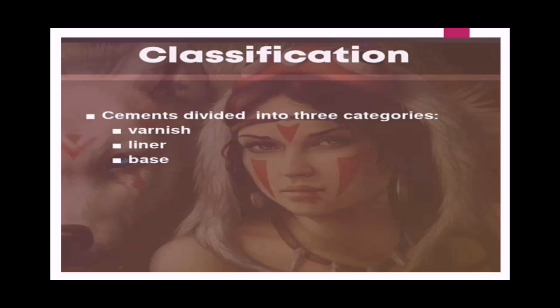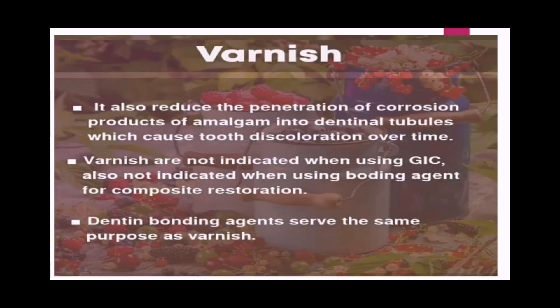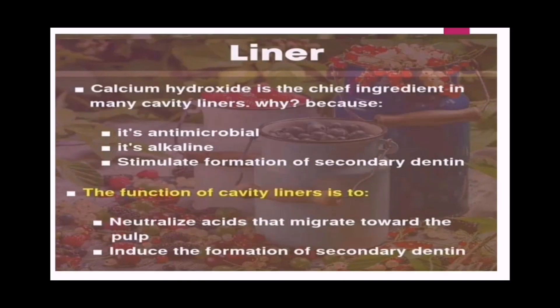Classification: cements are divided into three categories — varnish, liner, and base. Varnishes are composed of natural and synthetic resins dissolved in a volatile solvent. When applied onto the tooth surface, the solvent evaporates and leaves a thin coating of resin. This helps block the openings of the dentinal tubules to the pulp. Studies and clinical experience have shown that using varnish reduces pulpitations and postoperative tooth sensitivity. Varnish also reduces the penetration of corrosion products of amalgam into the dentinal tubules, which would cause tooth discoloration over time. Varnish is not indicated when using GIC, and also not indicated when using bonding agents for composite restoration, as the dentine bonding agent serves the same purpose.